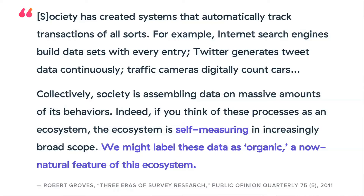I want to share a quote from Bob Groves, the former director of the US Census Bureau. He says: "Society has created systems that automatically track transactions of all sorts — for example, internet search engines build data sets with every entry, Twitter generates tweet data continuously, traffic cameras digitally count cars. Collectively, society is assembling data on massive amounts of its behavior. If you think of these processes as an ecosystem, the ecosystem is self-measuring. We might label these data as organic." This was from a paper he wrote in Public Opinion Quarterly in 2011.